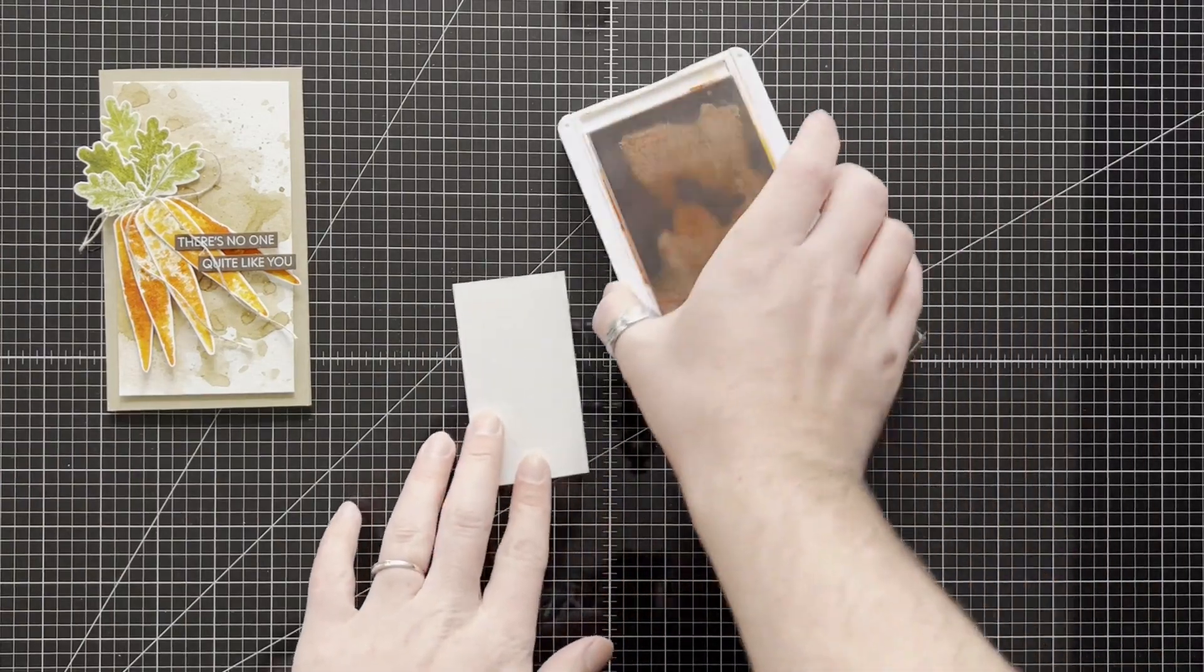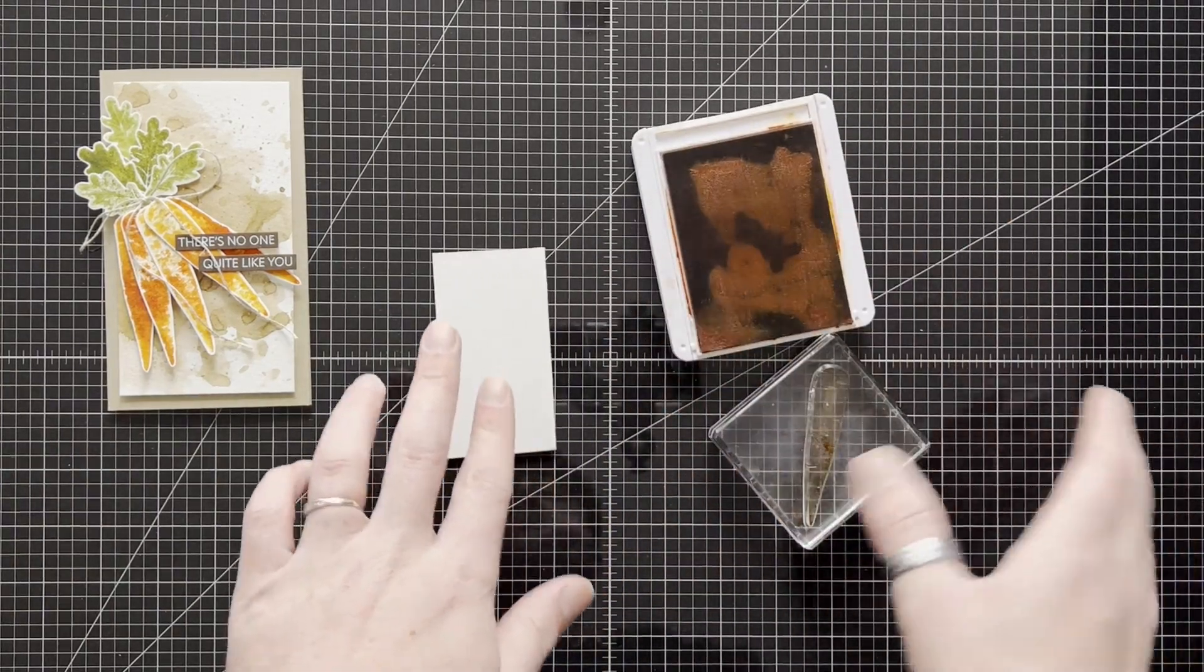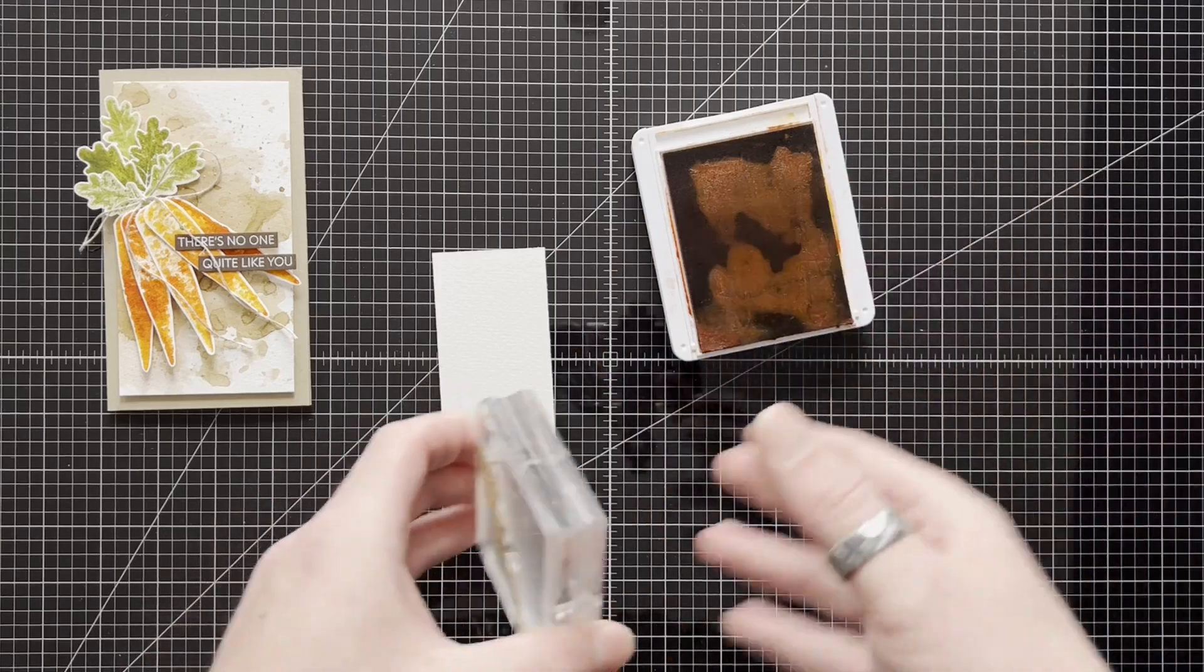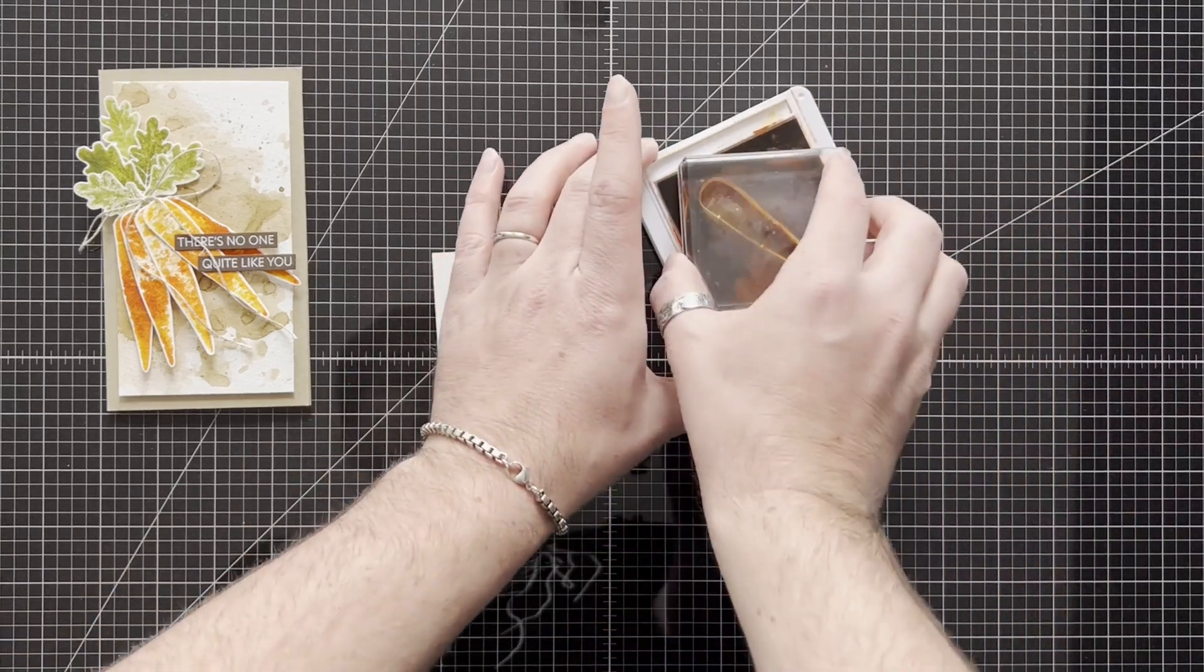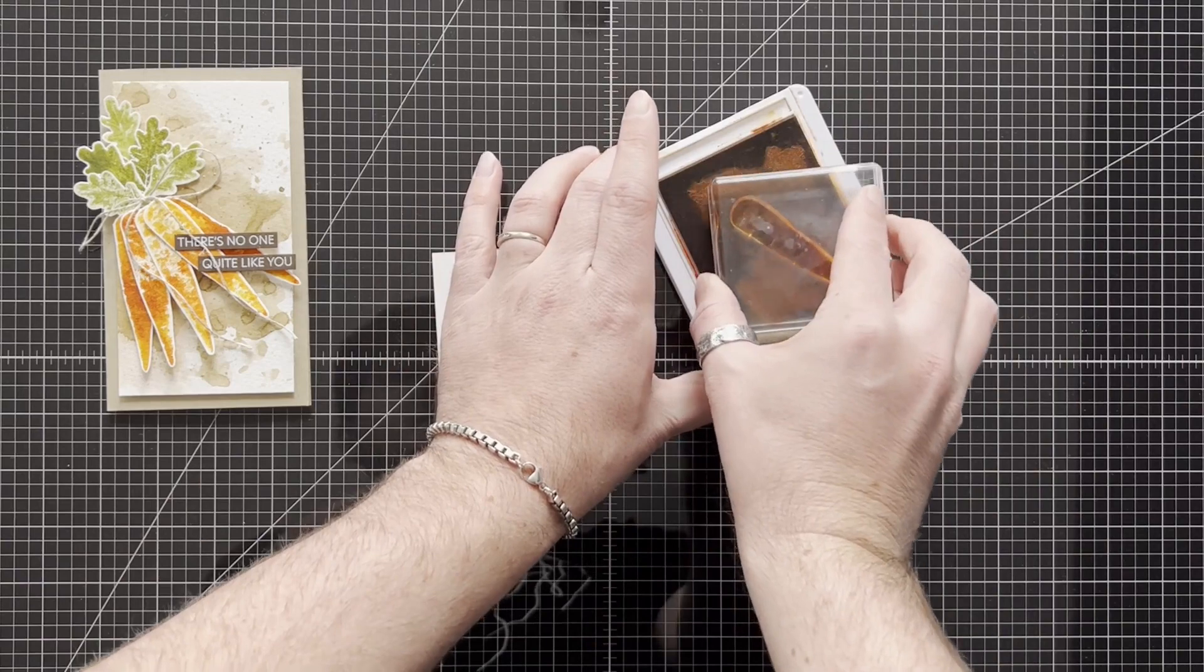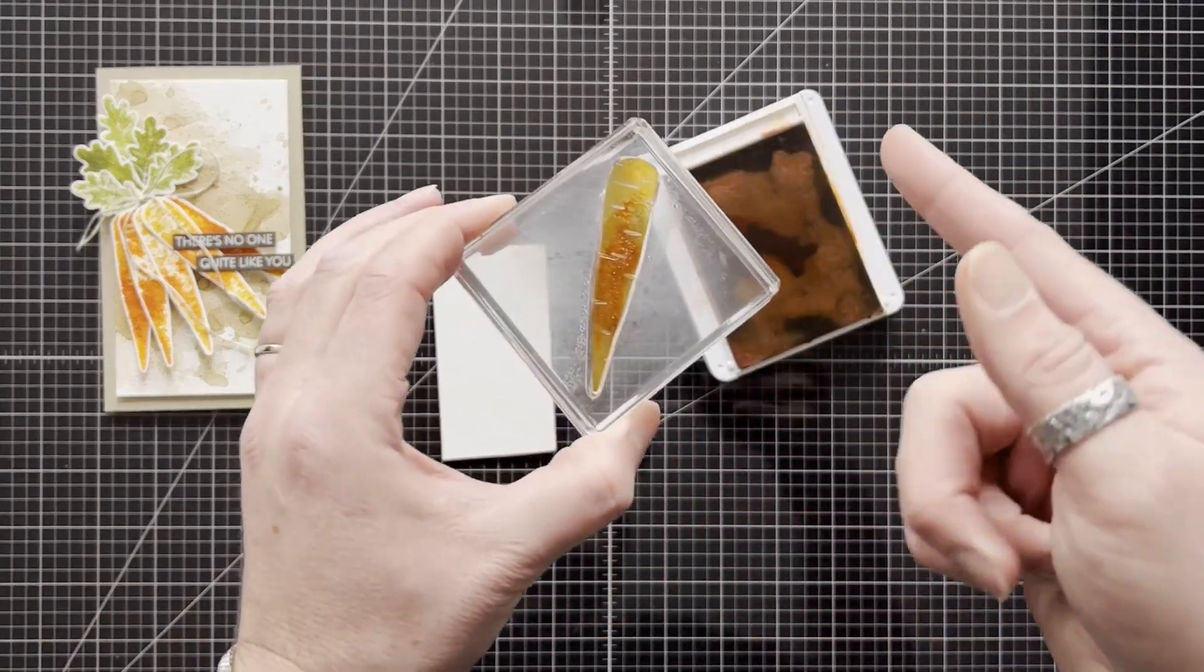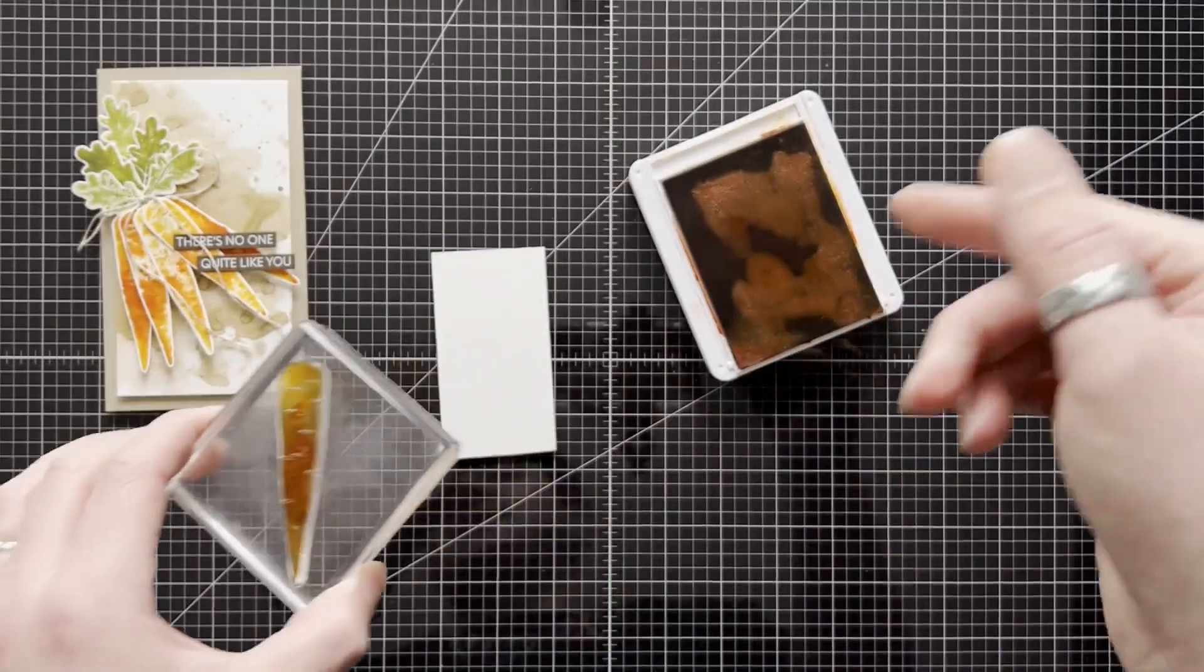So I'm grabbing my pumpkin pie ink. Excuse the state of the ink pad, I've re-inked it and it's kind of gone all to the side. So I need to have another play, but I'm just going to ink up my stamp. As you can see, the ink's on there.